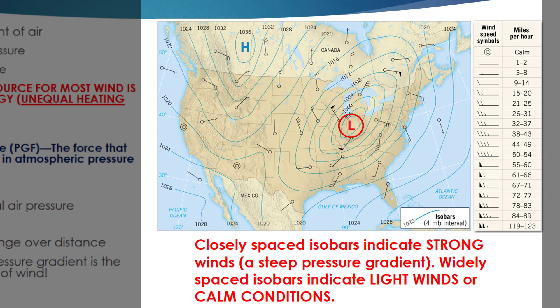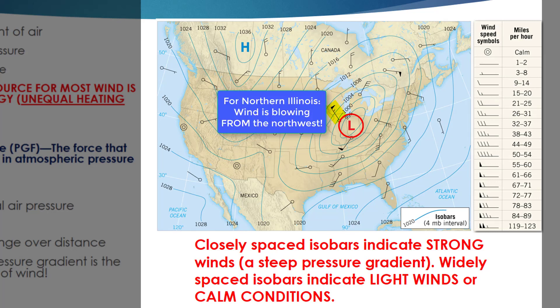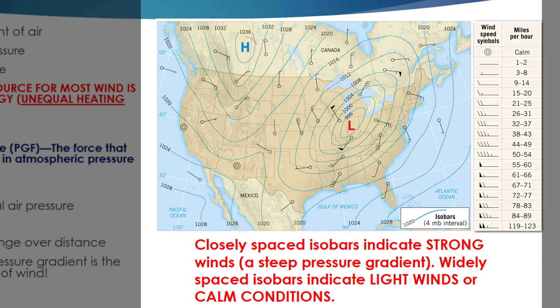The winds don't cross the isobars in a perpendicular fashion. One of the factors we'll discuss is the Coriolis effect, which deflects winds to the right in the Northern Hemisphere. Wind direction can be determined by knowing the wind is always toward the station circle — for the northern Illinois location, winds are coming out of the northwest. In the high pressure zone located in Canada, winds come out of the high pressure area, producing diverging winds, with relatively weak wind speeds compared to the low pressure zone.